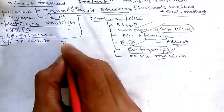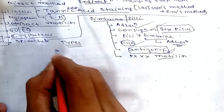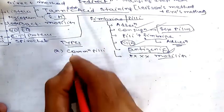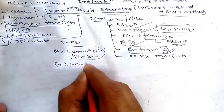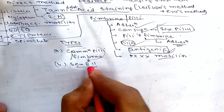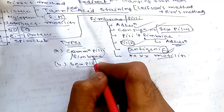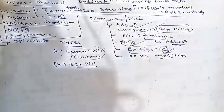According to function, pili are of two types: common pili (fimbriae), whose function is adhesion, and sex pili, which help in conjugation. Common pili help bacteria adhere to epithelial surfaces, aiding in colonization — hence they are also called colonization factors. They also help attach to red blood cells, leading to hemagglutination, and to surfaces of certain fungal cells.